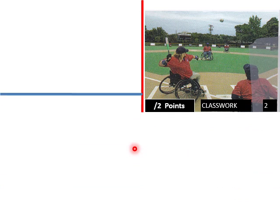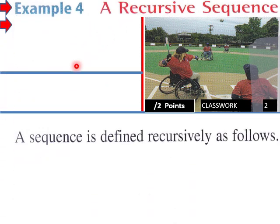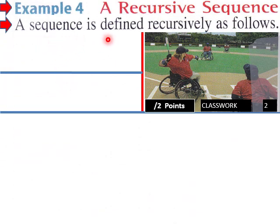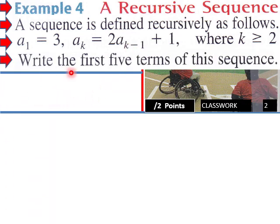A recursive sequence is defined recursively as follows: a₁ = 3, and aₖ = 2aₖ₋₁ + 1 where k must be greater than or equal to 2. Write the first five terms of this sequence.